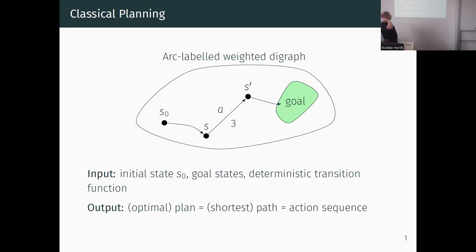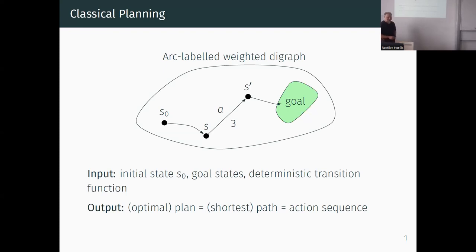You can understand this as a standard deterministic finite automaton, where we have states, deterministic transitions, final states which are the goal states, and an initial state. The computational challenge is that you are not given the whole automaton or transition system, but only a succinct representation - just the initial state, a specification of the goal states, and a specification of the transition function.